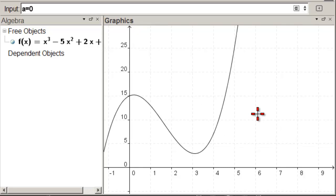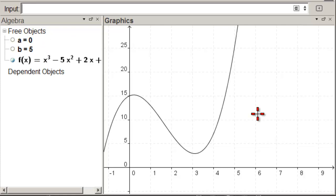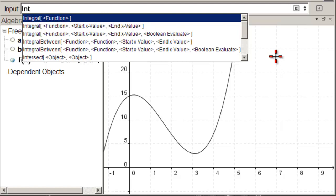So A equals 0, hit Enter. B equals 5, hit Enter. And now we're going to do the exact integral, which is integral. We start to type integral. There it is.